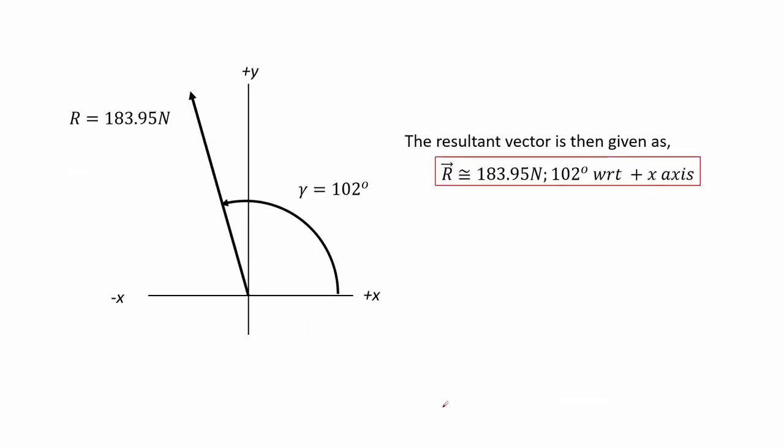So, using the component method, the resultant vector is about 183.95 newtons. Its position is 102 degrees with respect to the positive x axis.